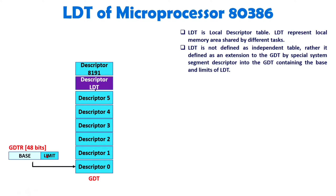When we talk about LDT, it is not like GDT. Here, you will have a descriptor LDT inside the GDT. So out of the descriptors in the GDT, any descriptor could be the LDT descriptor. This LDT descriptor will point to one table, and that table again contains descriptors regarding a particular task. So we have a descriptor LDT inside the GDT, and that is a special system segment descriptor inside the GDT. This LDT descriptor contains the base address and limit of the Local Descriptor Table.